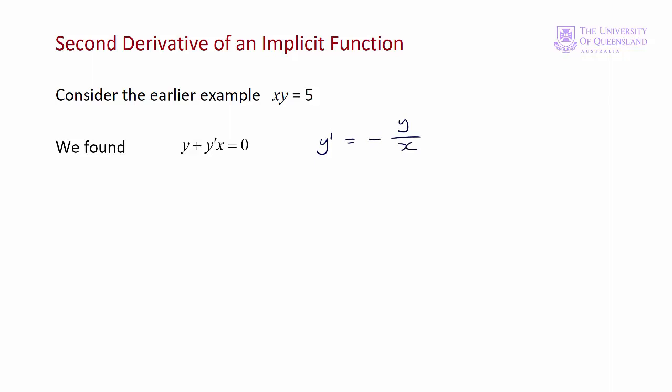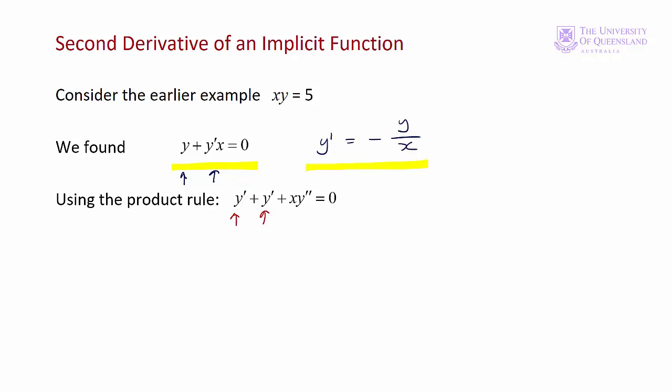When finding higher-order derivatives it's usually easier to differentiate the function from the expanded form rather than the rearranged form. Differentiating again: the first term y gives y′. Using the product rule on the second term: y · d/dx(x) + x · d/dx(y′) = y′ + x·y″. To isolate y″ we substitute in for y′. Since y′ = −y/x, substituting and rearranging gives y″ = 2y/x².